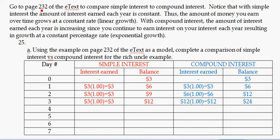As you should have read on page 232, if you compare simple interest to compound interest, we can see that simple interest is going to be just a constant rate, so it's going to be linear growth — a line. Think y equals mx plus b. Versus compound interest, as we've been talking about, this is going to be exponential growth.